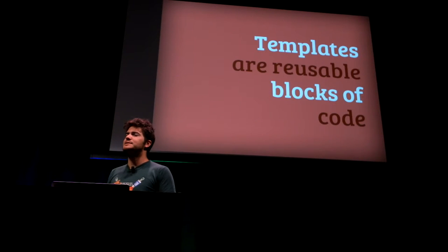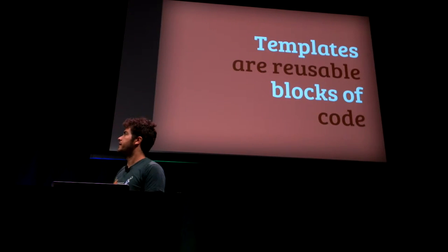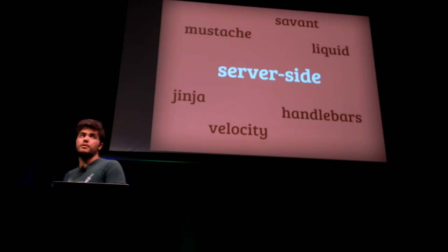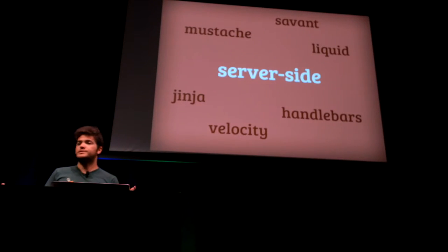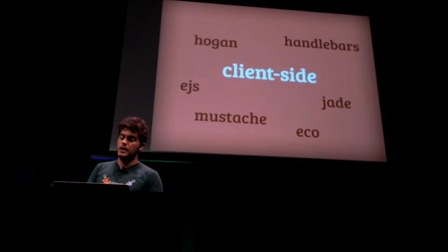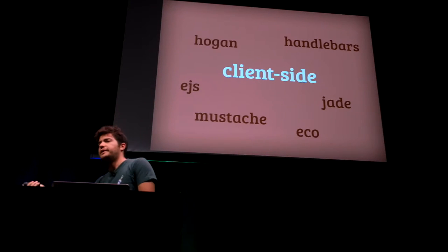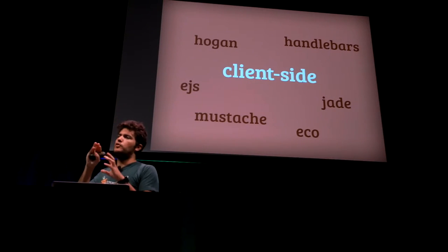The other part is templates. Templates is not a new thing — we've been hearing about templates forever. Templates are just reusable blocks of code. On the server side, if you've played with Java, Python, or Node.js, you've probably heard about Handlebars, Velocity on Java, Jinja, Liquid, Mustache. On the client side, you have Jade, Mustache, EJS, Handlebars again, Hogan. There's a whole ecosystem of libraries to help you reuse blocks of code.